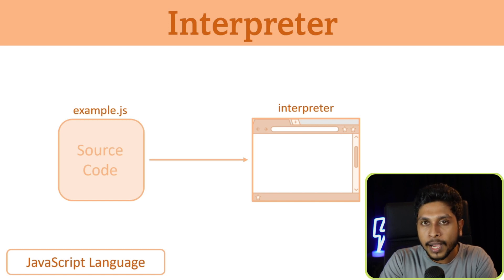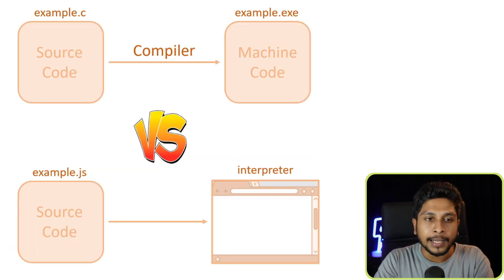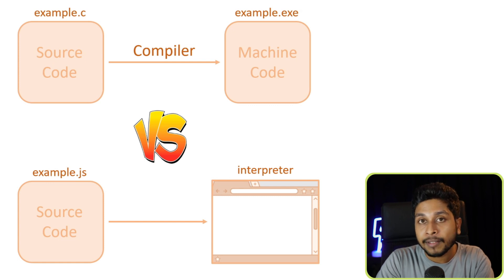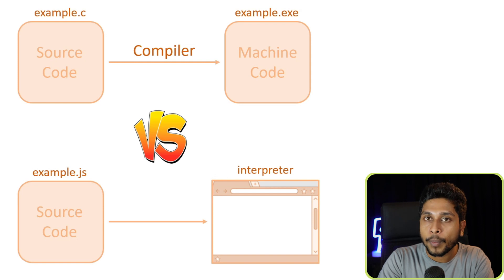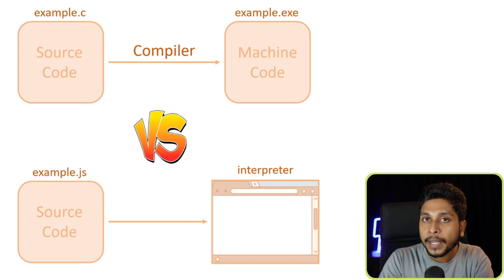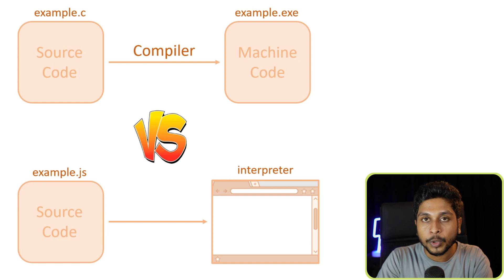When you use the executable file, you can use the JS file and run the source code directly. You can generate a separate executable file from the compiled language, using machine code in a binary format. For interpreter languages, you can translate and execute.